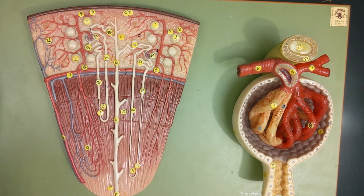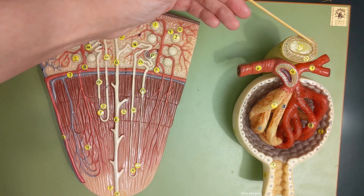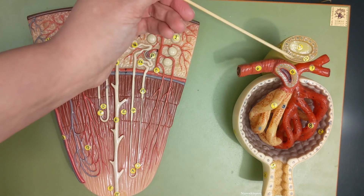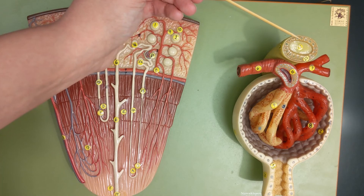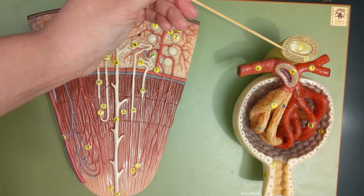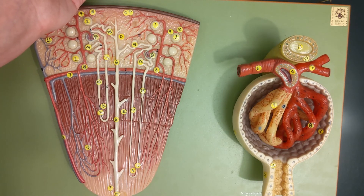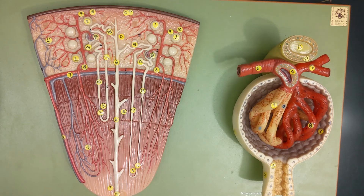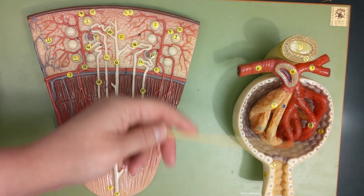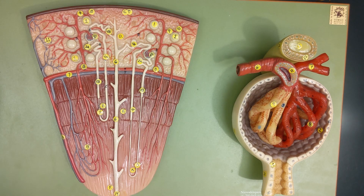Exiting the corpuscle, this would be the beginning of the proximal convoluted tubule. The last question is: what is this tube, and what are the cells inside of it? This tube is part of the ascending limb of the loop of Henle. The cells inside the tube are the macula densa. The macula densa and the juxtaglomerular cells together make up the juxtaglomerular apparatus, which helps control the filtration rate of the glomerulus — the GFR. Those are all of the questions I have about the kidney. I hope that was helpful. Have a great day and have fun learning!